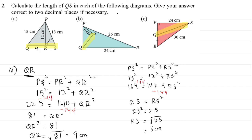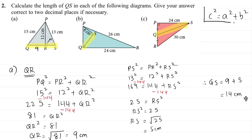In conclusion, QS equals QR plus RS, which is 9 plus 5, giving 14 cm. The key flow to remember is: first, build the equation by identifying where the hypotenuse is. Once you recognize the hypotenuse, that becomes the subject. Then substitute into the formula — remember: C squared equals A squared plus B squared — always.